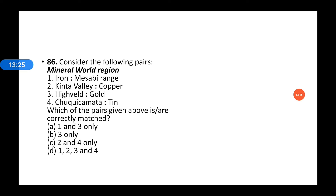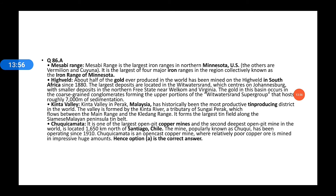Another question: Consider the following pairs of minerals and world regions. First: iron — Mesabi region. Second: tin — Kinta Valley. Third: gold — Highveld. Which of the pairs given above are correct? Option A is correct — one and three are correct: Mesabi region is rich in iron, and Highveld is rich in gold.